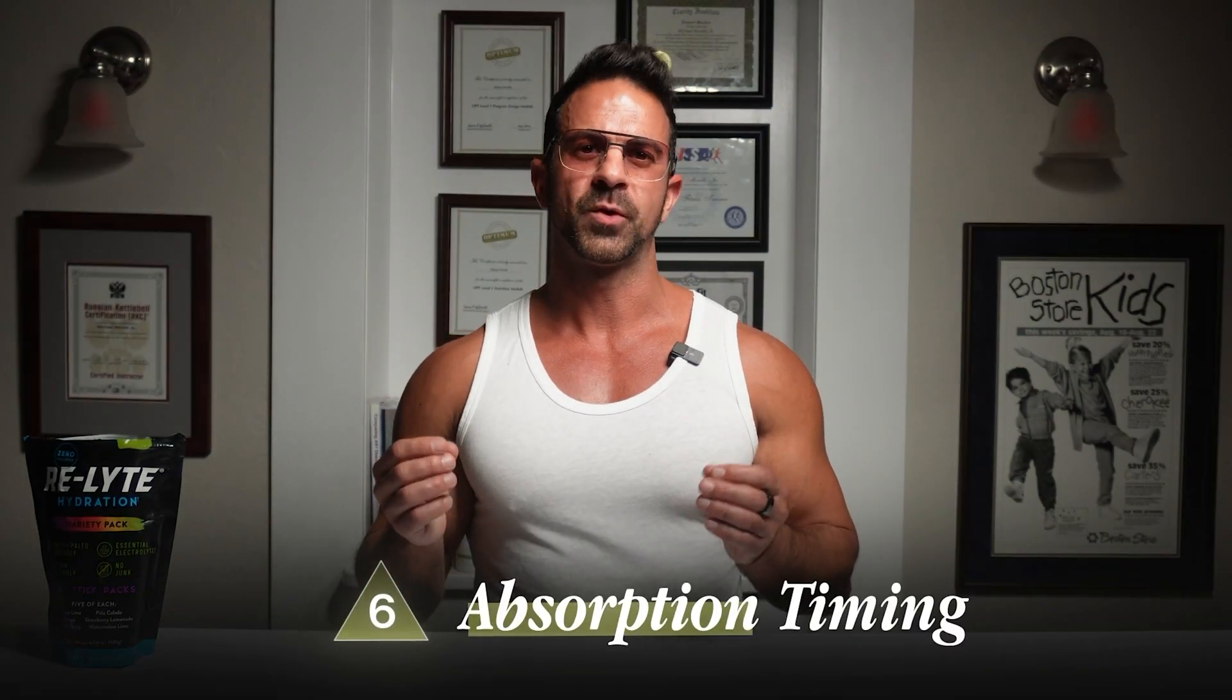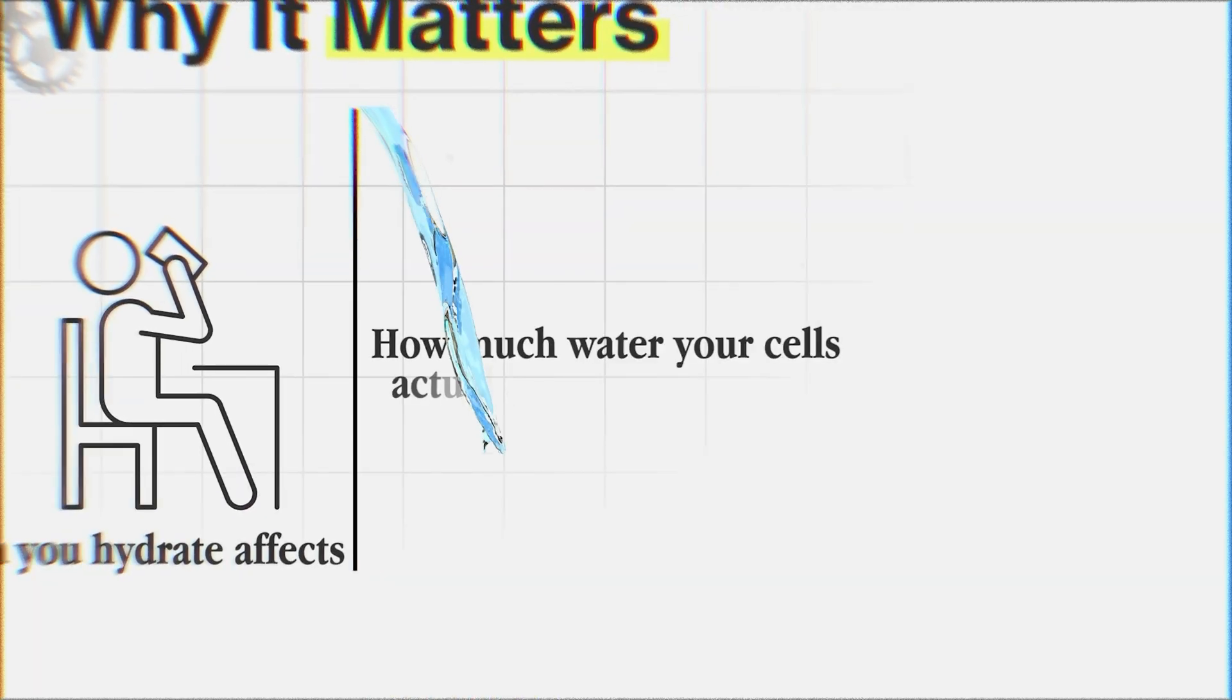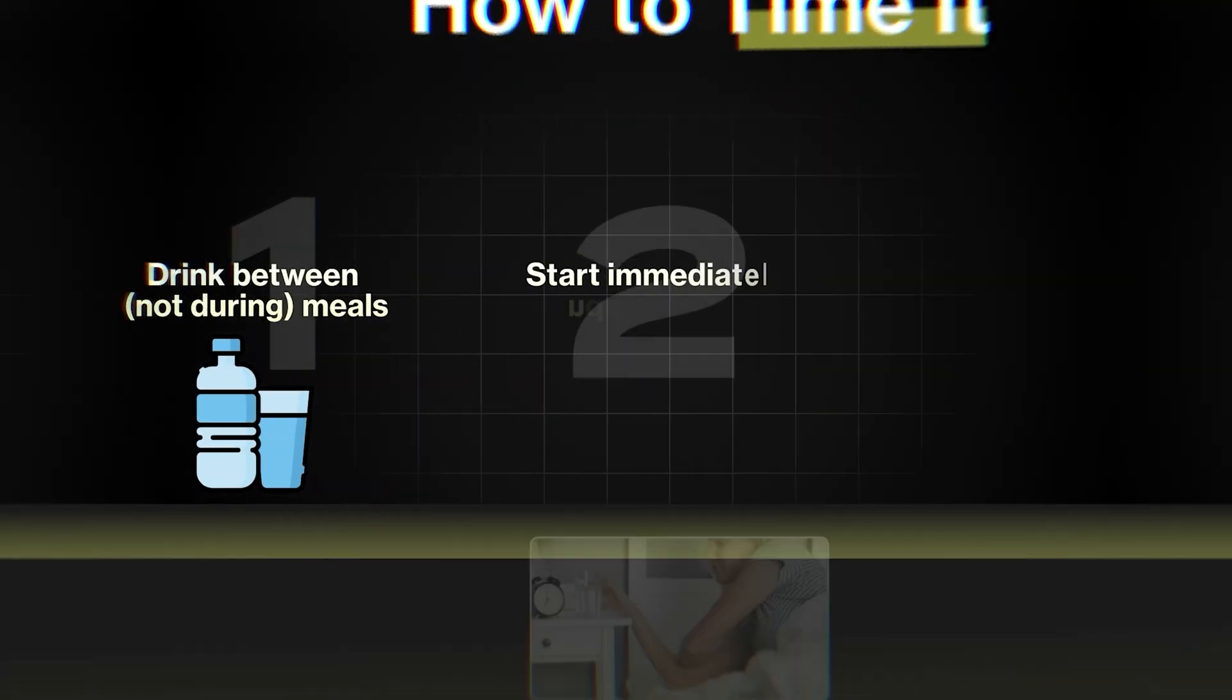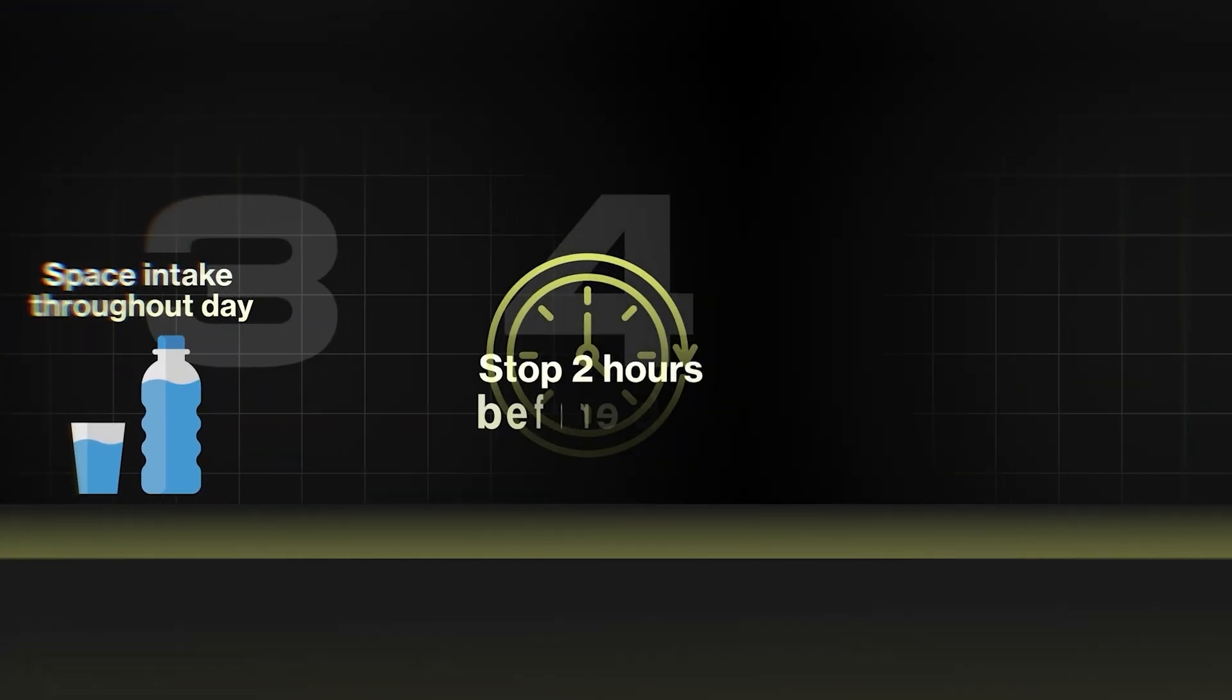Number six, absorption timing. Why does it matter? Because when you hydrate affects how much water your cells actually use versus waste. How to time it? Drink between, not during meals. Start immediately upon waking. Space intake throughout the day. Stop two hours before bed.